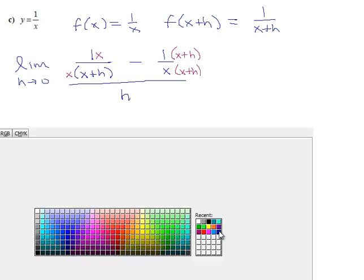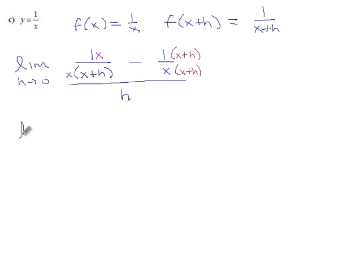And now we write it out again and see if it looks any better. Limit as h goes to 0. We have x minus x and also minus h over the denominator x, x plus h.